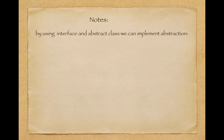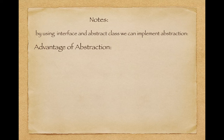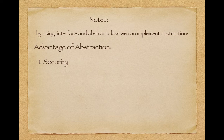One important note: by using interface and abstract class we can implement abstraction. If we have any abstract method, we need to use the 'abstract' keyword before the class — that is abstraction. In coming videos I will discuss interface in detail. The first advantage of abstraction is security, because we are hiding the internal implementation and operational parts and just showing the world some sets of features, so our backend steps are quite secure.